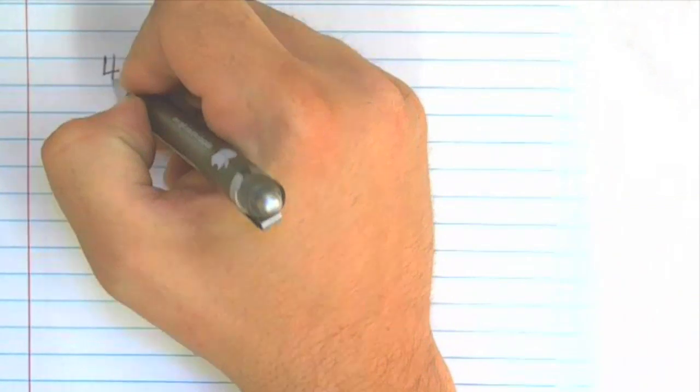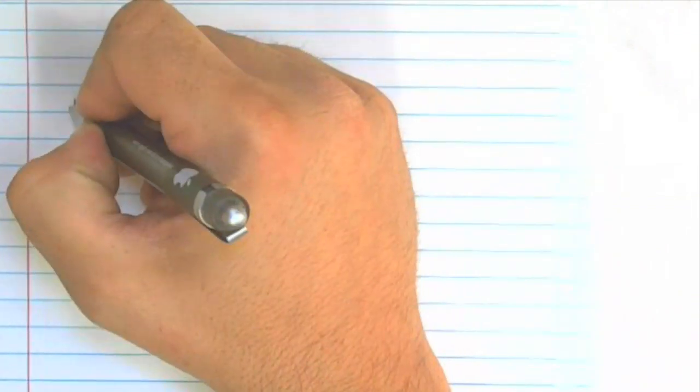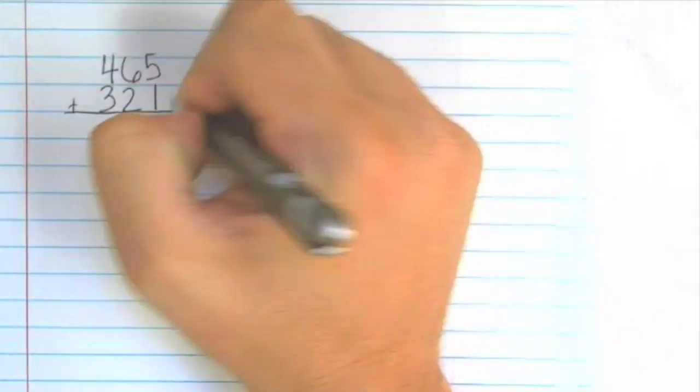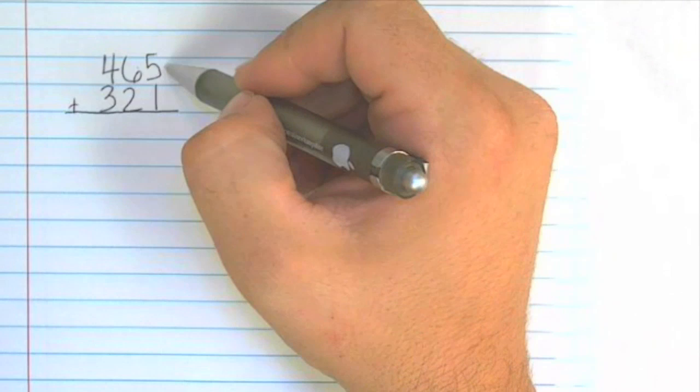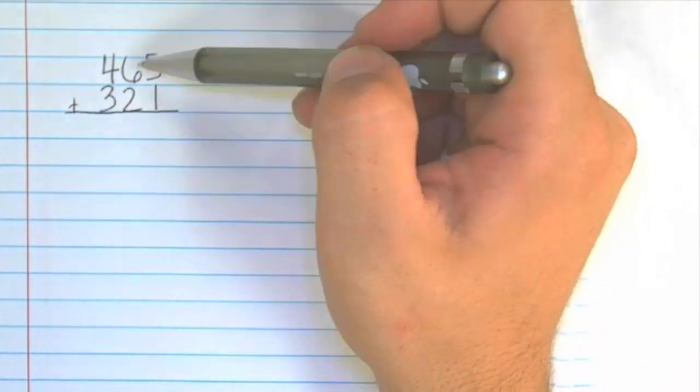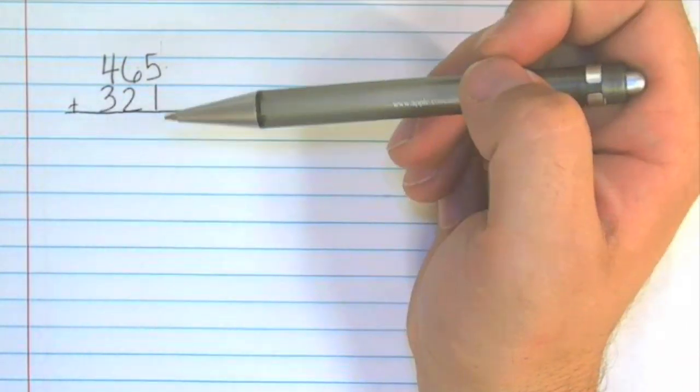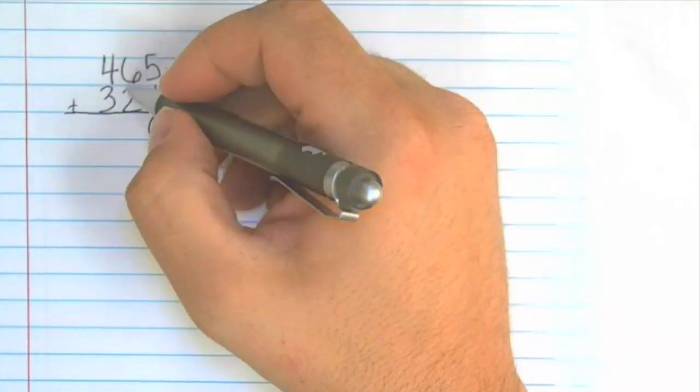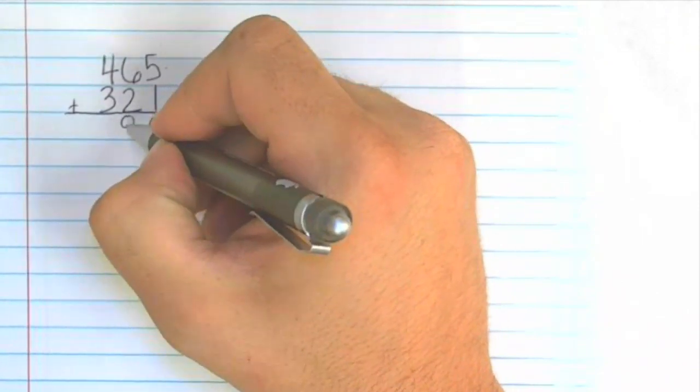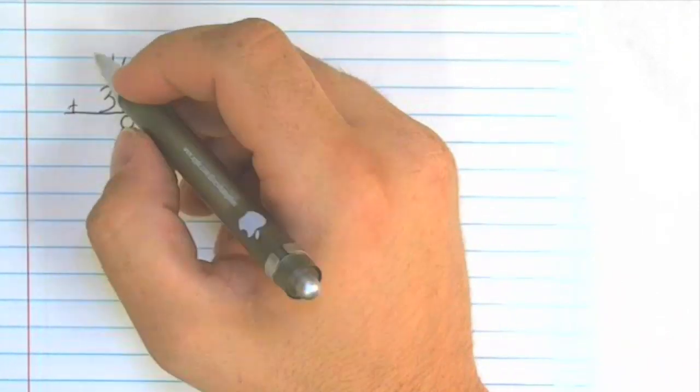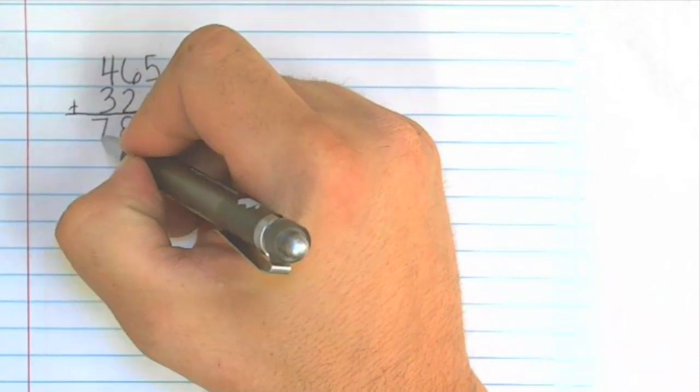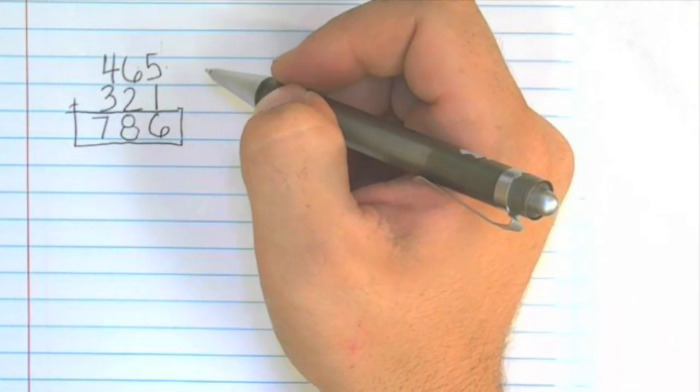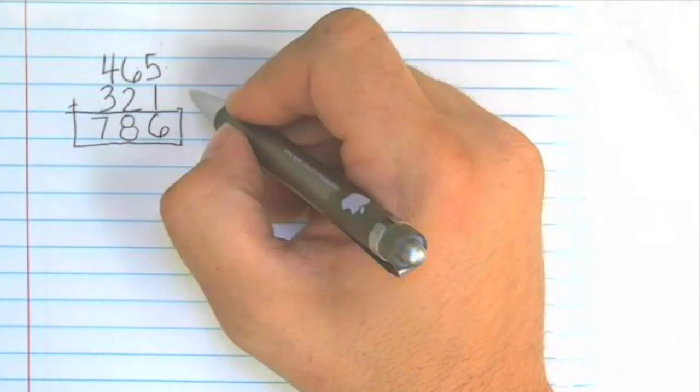465 plus 321. Again I'm writing neatly and I'm making sure that the digits are lined up correctly on top of each other. Five plus one is six, six plus two is eight, four plus three is seven, so the sum is 786. Let's check this problem using the inverse operation.